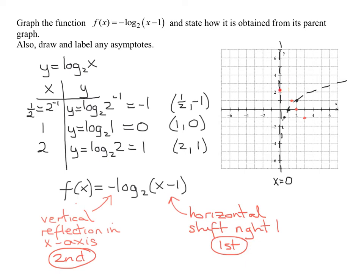And if I take a point here, move it 1 to the right and reflect it across the x-axis, hopefully you can see that all of these points are going to be on the line x equals 1. So my final vertical asymptote is going to be x equals 1.